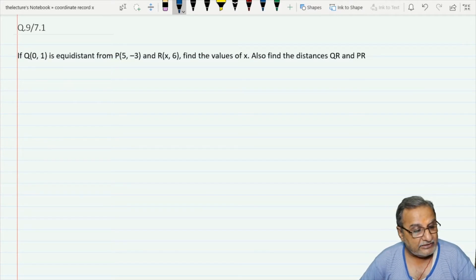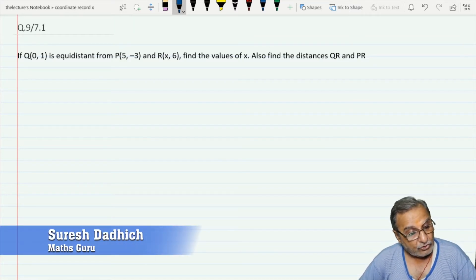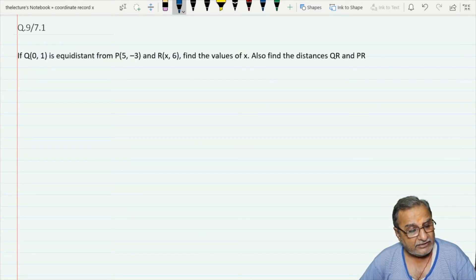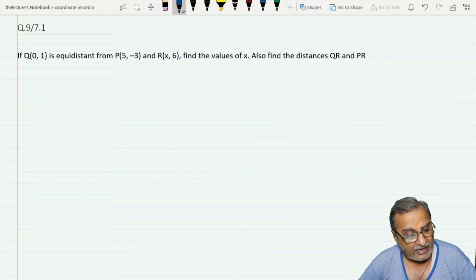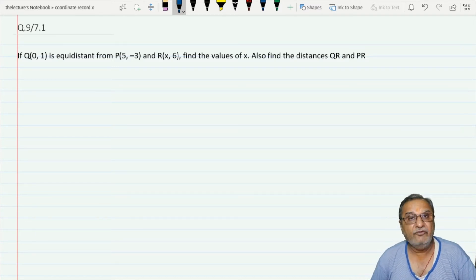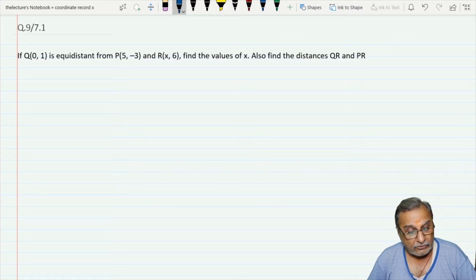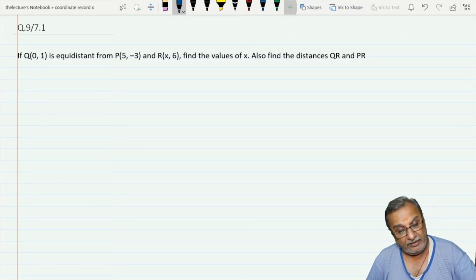Dear students, the question is taken from exercise number 7.1, question number 9. The question is: if Q(0,1) is equidistant from P and R, then find the value of x. Also find the distances QR and PR.